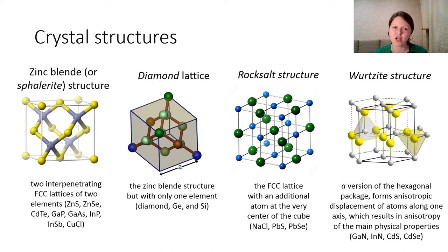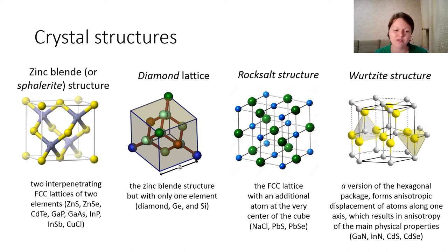The second structure is the diamond lattice. It is also the zinc blende structure but with only one element: diamond, germanium, or silicon. The next one is the rock salt structure, and I think it is the most widely known structure because it is the structure of sodium chloride that we use every day.